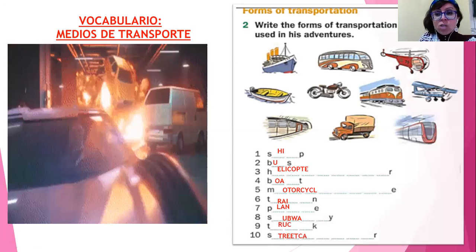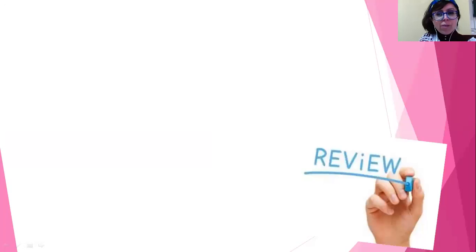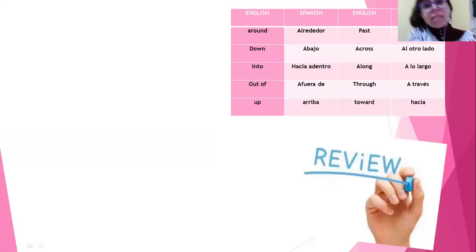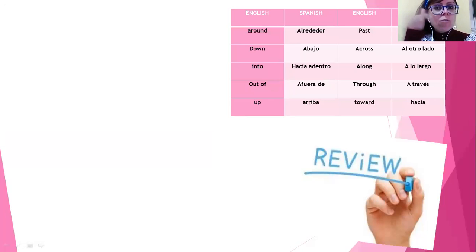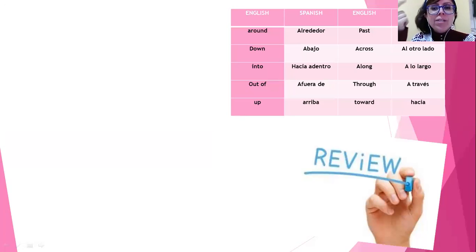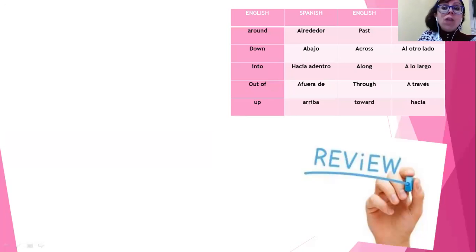So let's continue with vocabulary of Unit 8 — let's review. I explained to you guys in a worksheet: prepositions. Las preposiciones — preposiciones del lugar, las palabras que nos ayudan a ubicarnos en un espacio determinado. Around, down, into, out of, up, past, across, along, through, and toward.